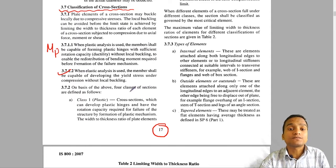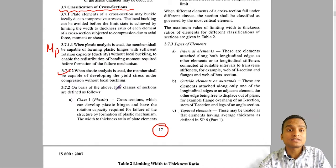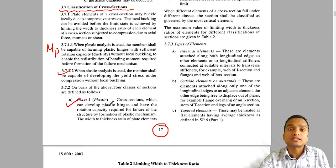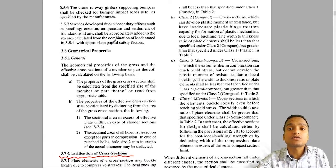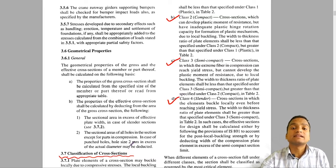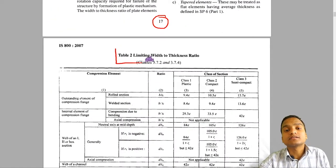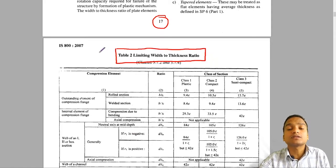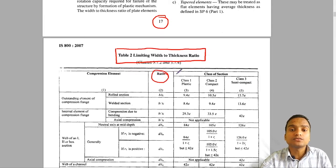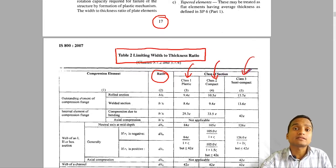On the basis of the above, there are four classes of sections. Class 1 is called plastic section. Class 2 is called compact section. Class 3 is called semi-compact section. Class 4 is called slender section. These are given in Table 2 of the IS code, which classifies different sections based on their width-to-thickness ratio. According to that ratio we classify a section as class 1 plastic, class 2 compact, class 3 semi-compact, or class 4 slender.